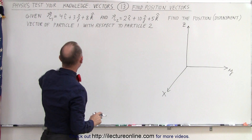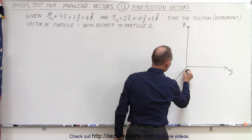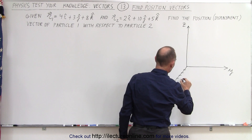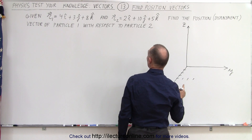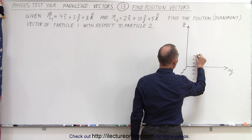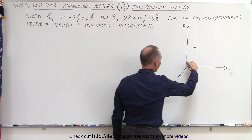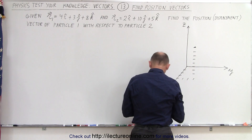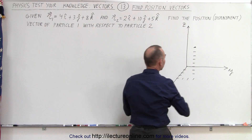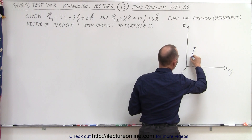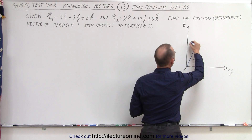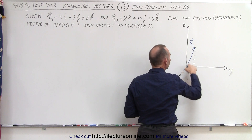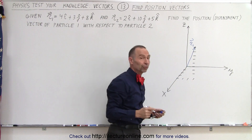The first particle is 4 units in the X direction, 3 units in the Y direction, and from that location, 8 units in the Z direction. So we have 4 units, 3 units, 8 units — that's our first position vector, R1, going from the origin to the location of that first particle.